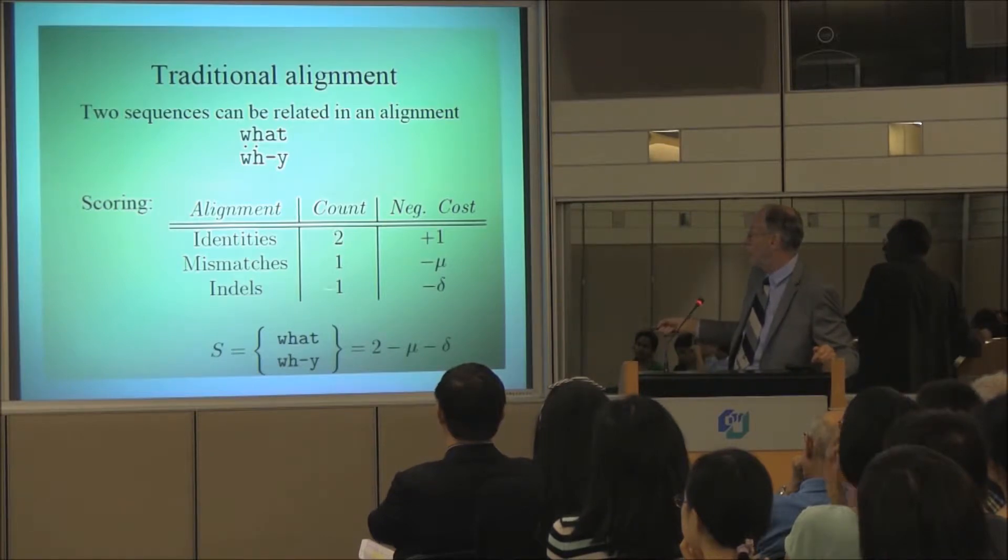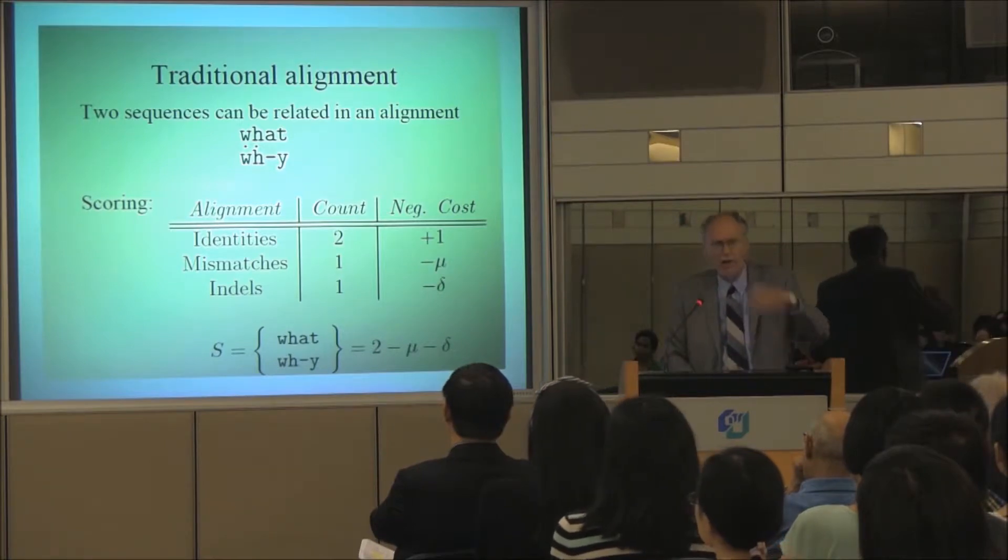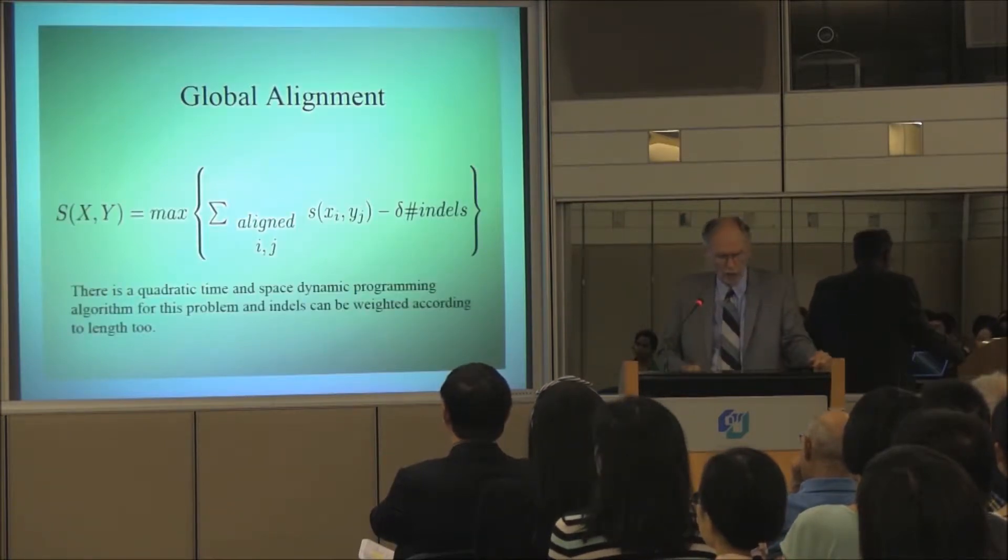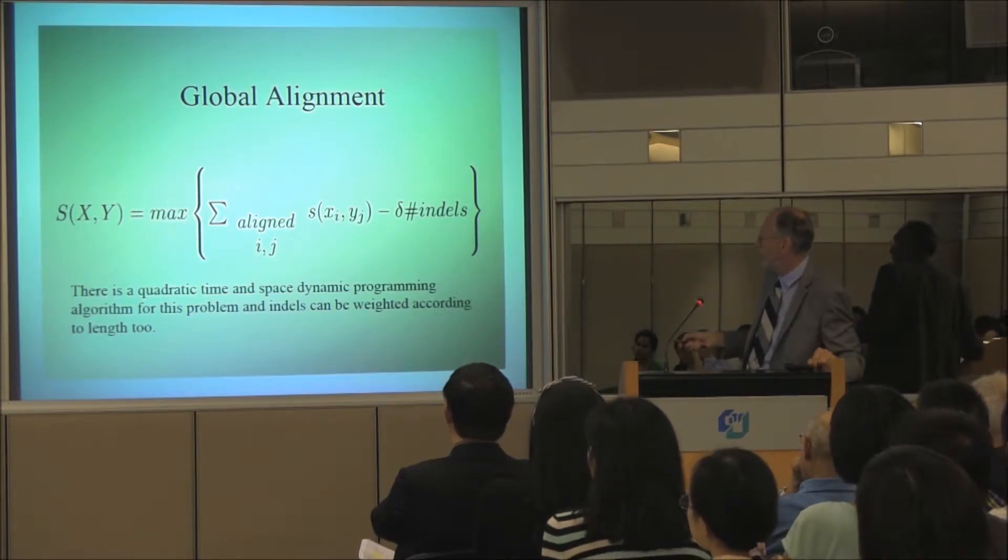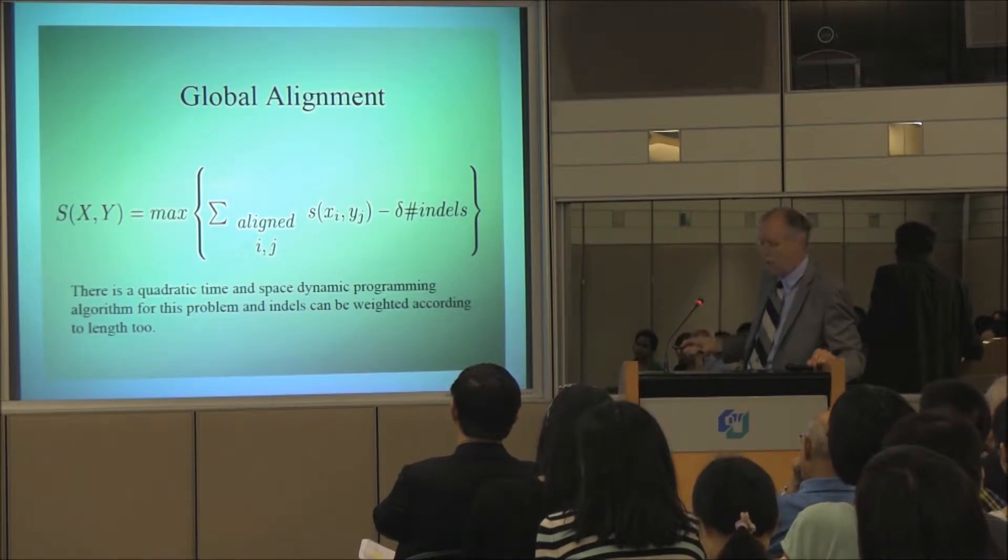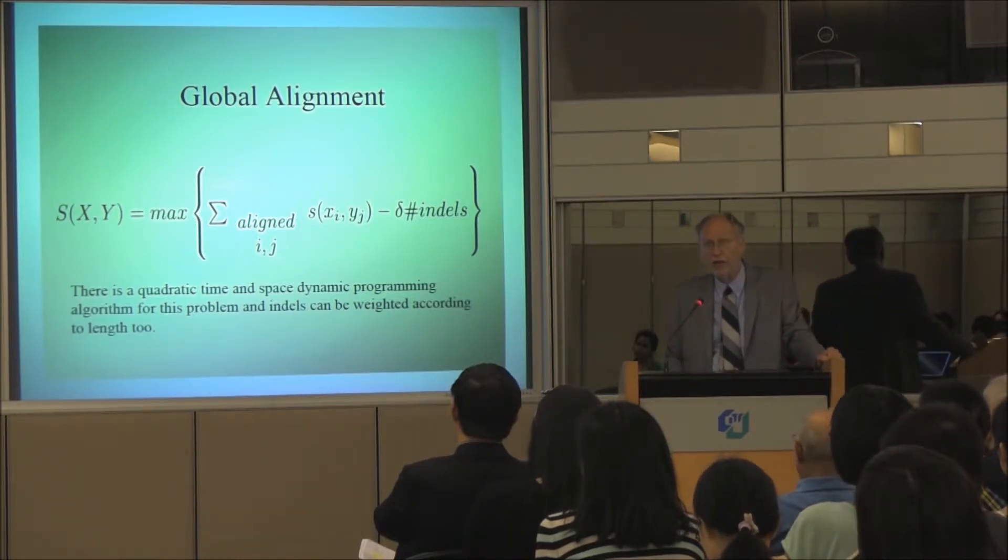So you score these things and you look for the maximum scoring alignment out of all alignments. There are an exponential number of these. The global alignment problem is finding the maximum over all this exponential number of alignments of the score of the alignment. And there's a quadratic space and time dynamic programming algorithm for this.